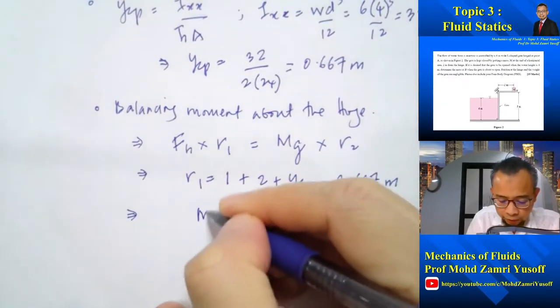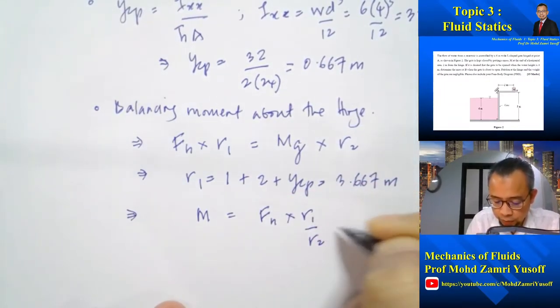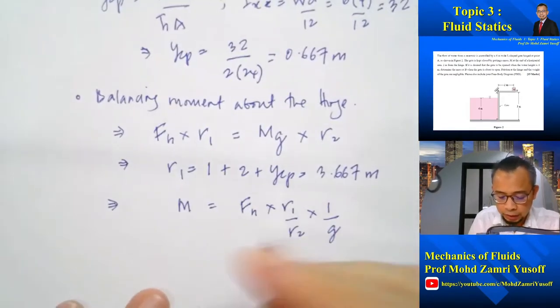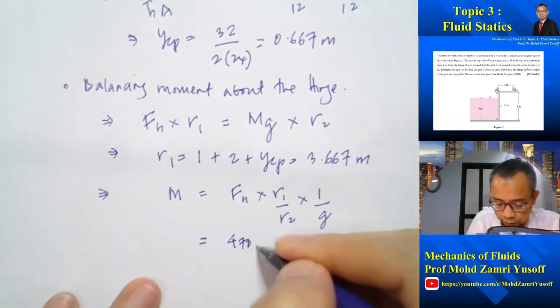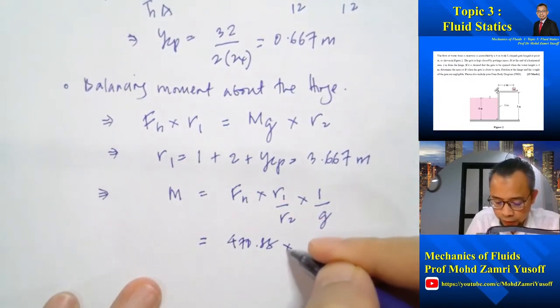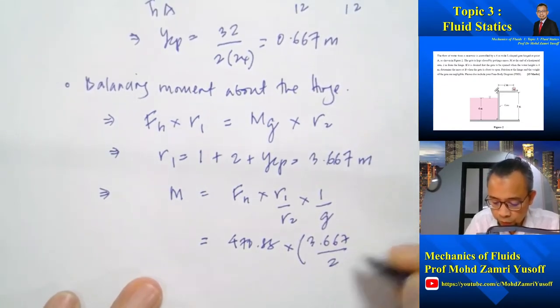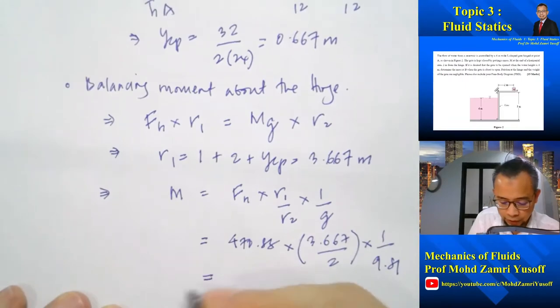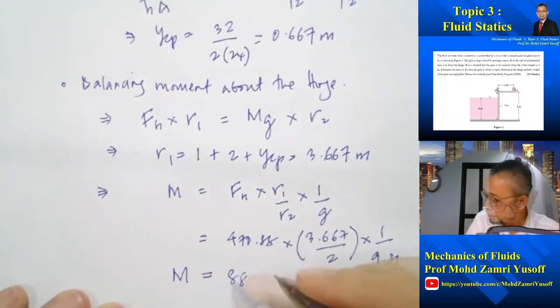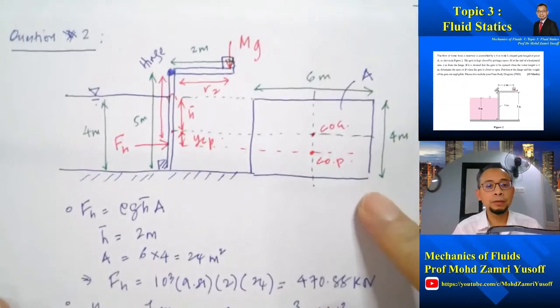So if we rearrange, then we have M is equal to FH multiplied by R1 divided by R2 and divided by g. So that gives us FH, we have already calculated just now, 470.88 kilonewton, R1 is 3.667 divided by R2 is 2 divided by, or 1 over 9.81. So that gives us M, the mass is 88,008 kilograms.